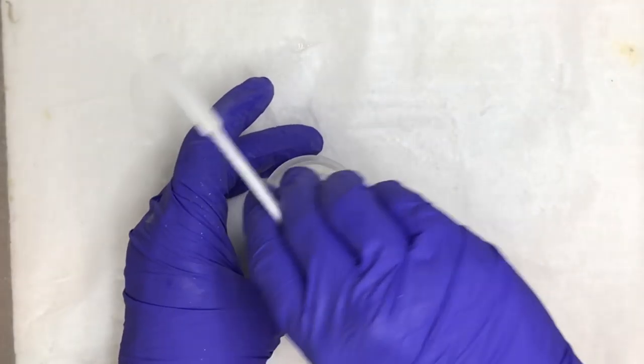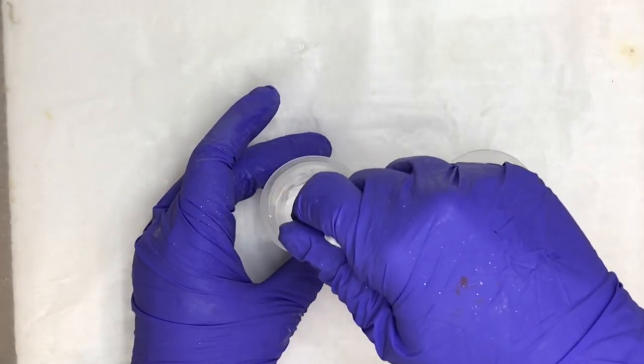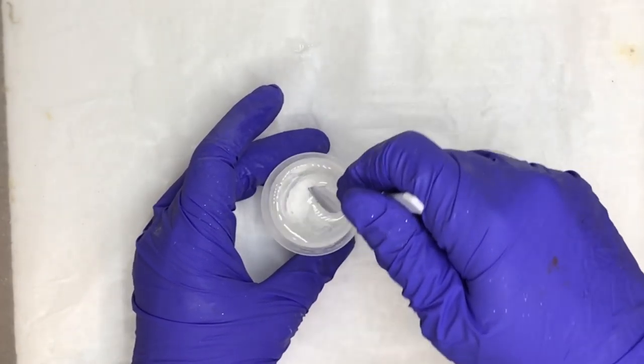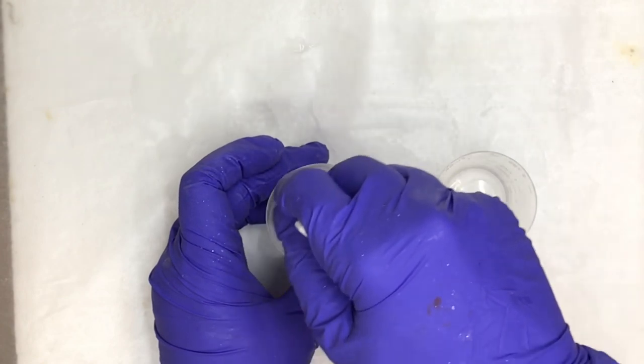Once you have the volumes you need, mix the two parts together. You will notice it looks a little wavy in the beginning, but it will clear up as you continue mixing.